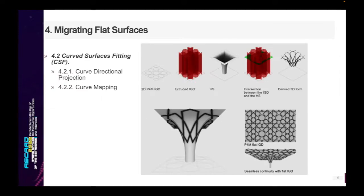The curved surfaces fitting method aims to fit a two-dimensional Islamic geometric design into various non-flat surfaces, and can be further categorized into two subcategories: curved directional projection and curve mapping. Both subcategories require a hosting surface to project or map the design onto. Similar to Euclidean point extrusion, the curved projection method also extrudes points in the z coordinate with no changes to the x and y coordinates. However, the value of the z coordinate is determined by the hosting surface, and the curves connecting design points are generated by solving the intersection of the extruded design with the hosting surface — thus inheriting the hosting surface's curvature.